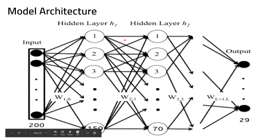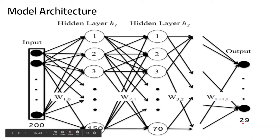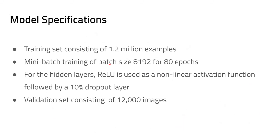The model we chose was a simple neural network, since the binary character images are perfectly segmented and don't require complex feature detection. The network architecture is: 200-node input layer (PCA components), followed by layers of 150, 70, and finally 29 output nodes — each representing one of the 29 Arabic characters. We trained using 1.2 million examples (over 300,000 words) for 80 epochs with a batch size of 8192, and added 10% dropout after every layer to prevent overfitting.